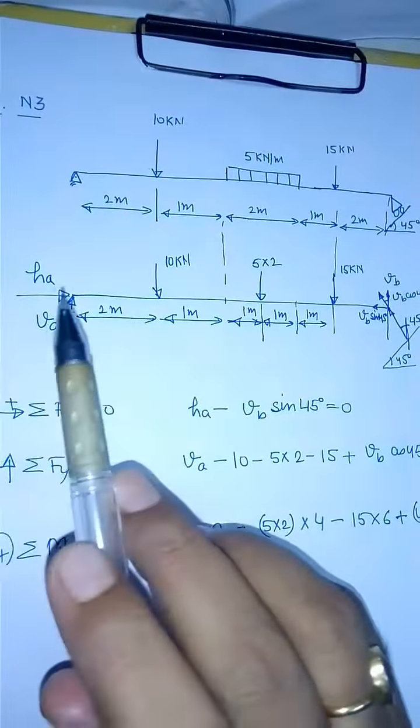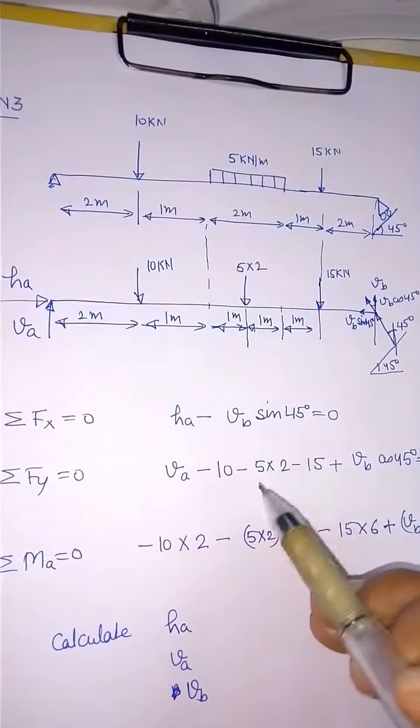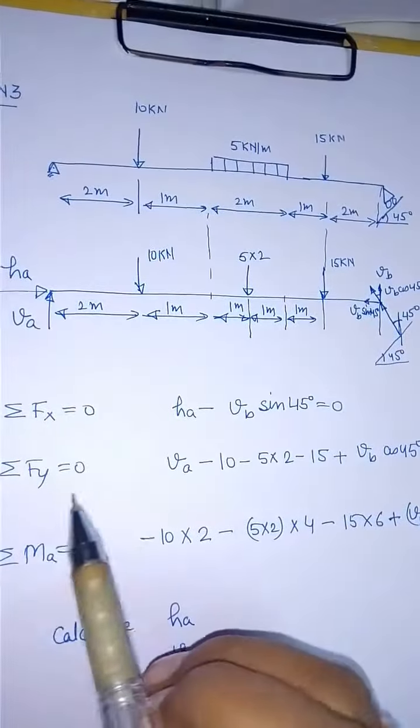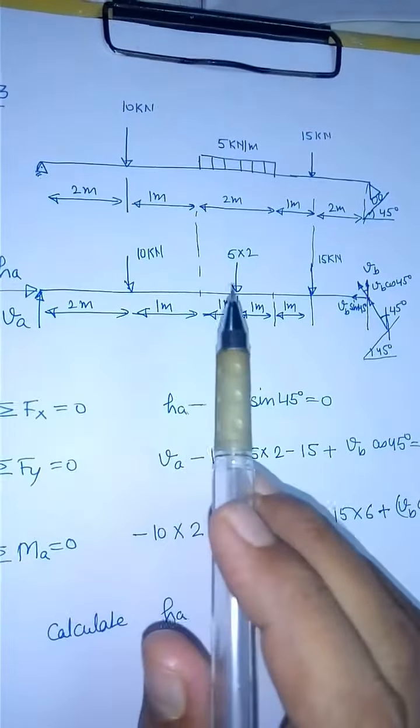Summation FY says VA minus 10 minus 5 into 2 minus 15 plus VB cos 45 upward, VB cos 45 is equal to 0.